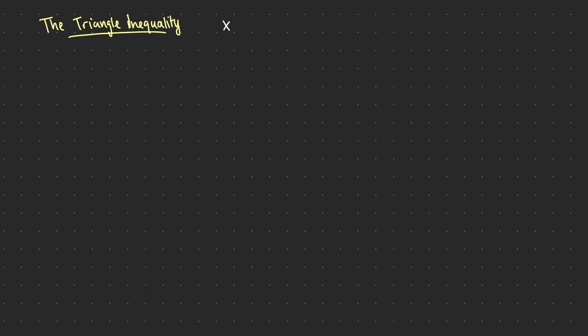The triangle inequality states that if I have two numbers x and y and I add them and then take the absolute value, that's less than or equal to taking the absolute values of them individually and then adding. This inequality is true for all real numbers x and y. If you know something about vectors, you can give a visual interpretation of this.